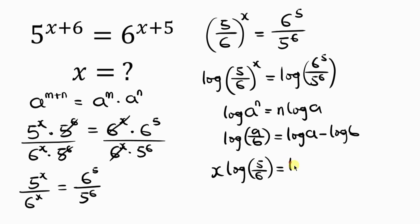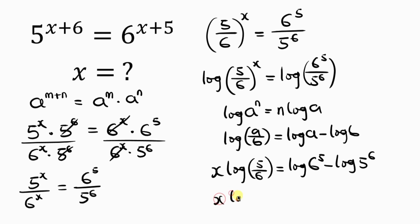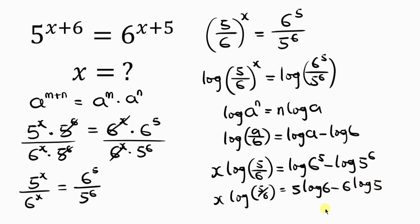Applying the second law to the right hand side, this becomes log 6 to the power of 5 minus log 5 to the power of 6. I can also apply the power rule of logarithm here, since both terms are carrying a power. So this becomes: x log(5/6) equals 5 times log 6 minus 6 times log 5.